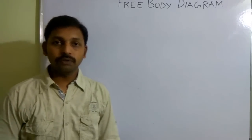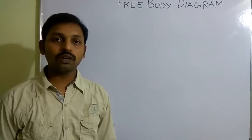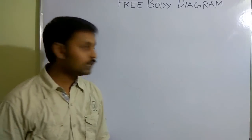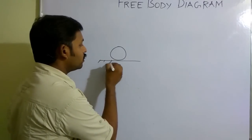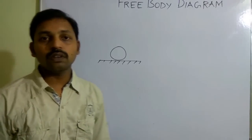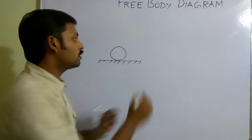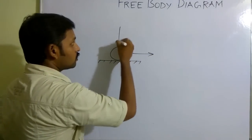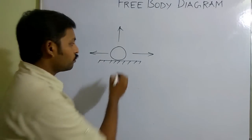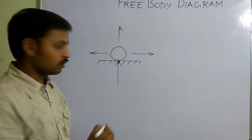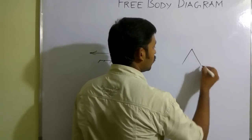Before drawing free body diagrams, we should learn how to represent reaction forces for different types of supports. The first type is roller support — a roller on a horizontal surface. A roller can move left, right, and upward, but it is not able to move in the downward direction. Therefore, for a roller support, you need to represent only one reaction.